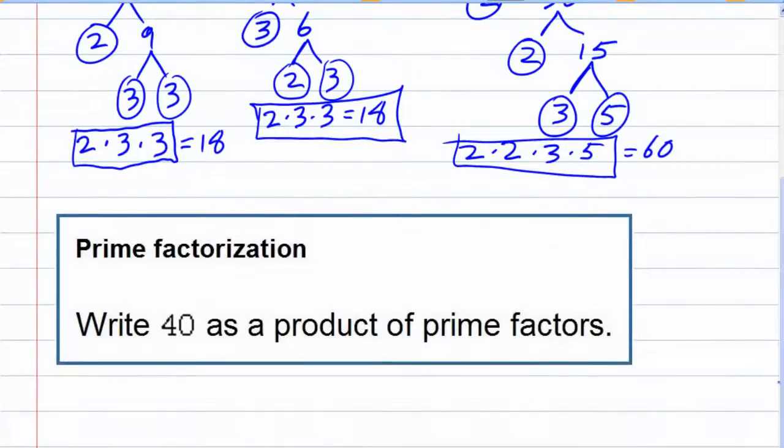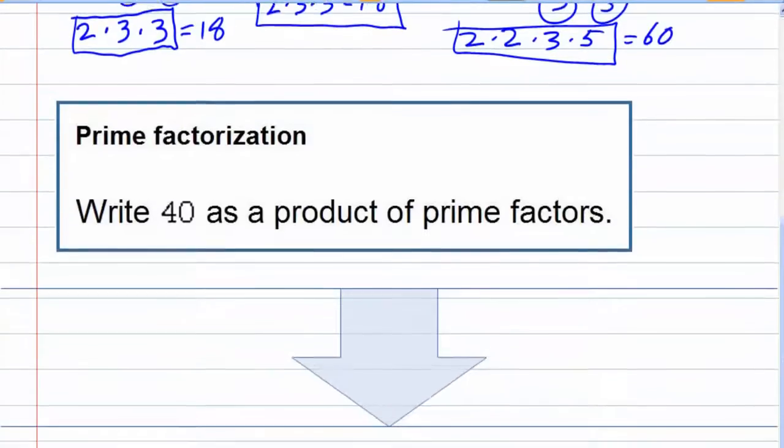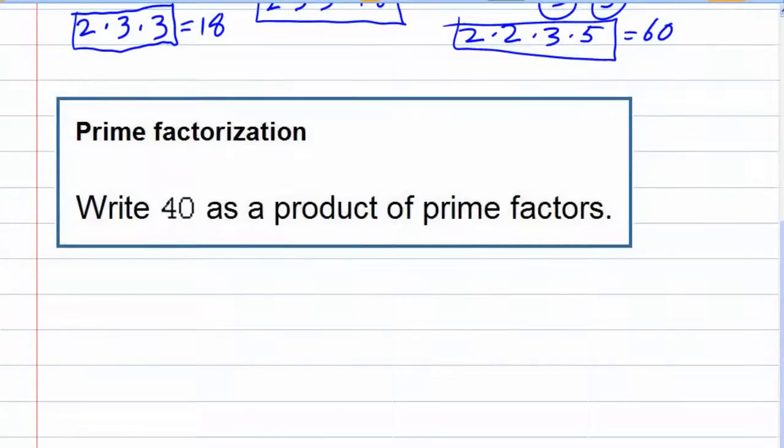For this one, we are asked to find the prime factorization of 40. So for 40, I want to start with it at the top of my tree for the tree method.